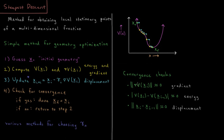So what are our convergence checks? Number one, we check that the magnitude of the gradient is approximately zero — zero within some specified threshold. We also check that the change in energy between two steps, i.e. the current energy minus the previous energy, is approximately zero. And we also check that we are not displacing the coordinates too far — that the displacement of the coordinates relative to the previous step is also approaching zero within a specified threshold.